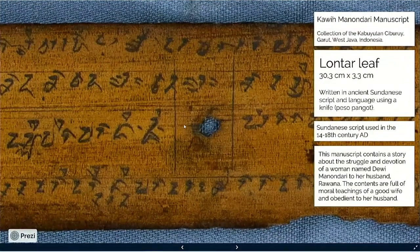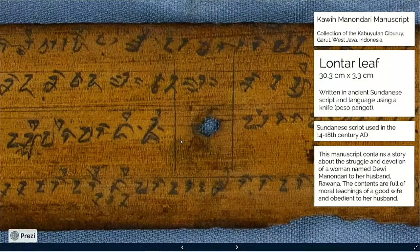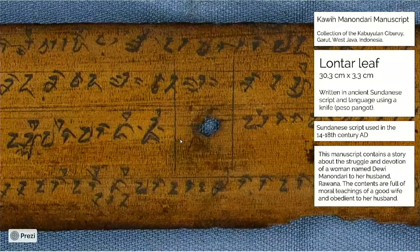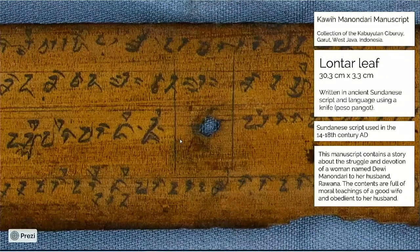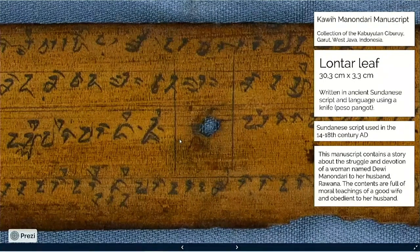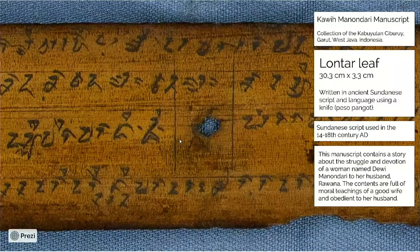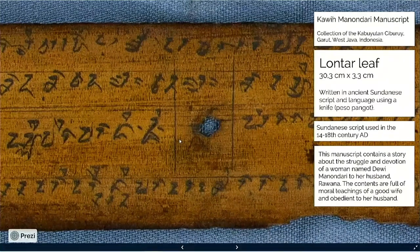This manuscript is a collection of Kabuhitan Ciburui, Garut District, West Java, Indonesia. It is written with old Sundanese script and language on Lontar media using a knife. Its name is Pesopangwat. I will now show you the form of the Lontar and Pesopangwat.